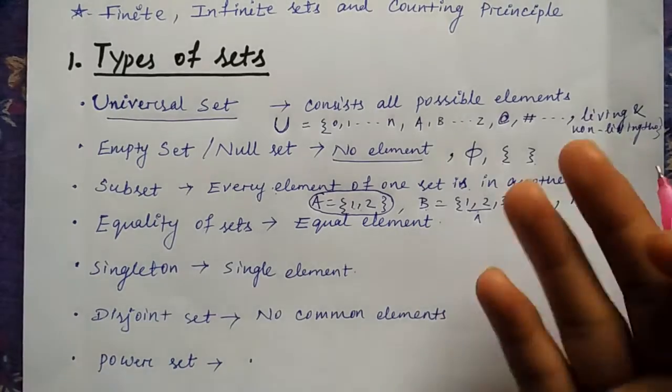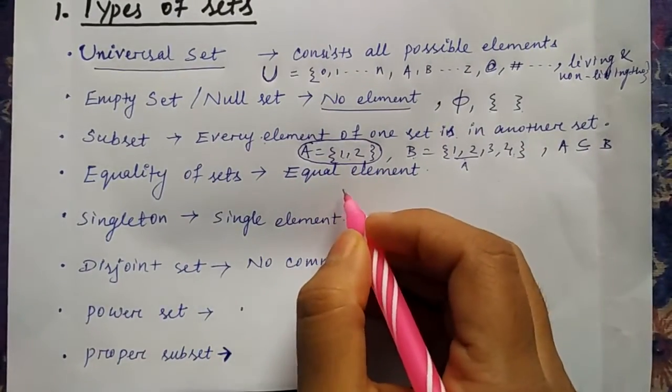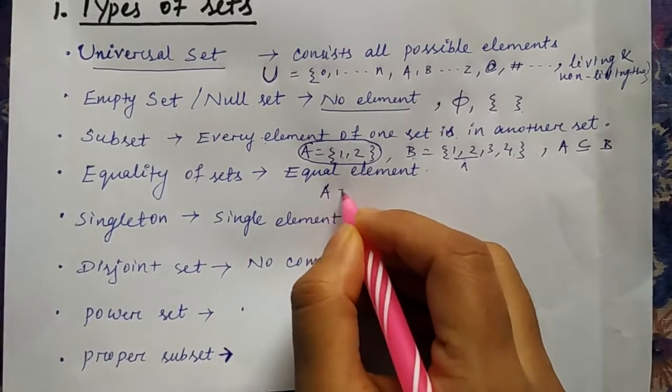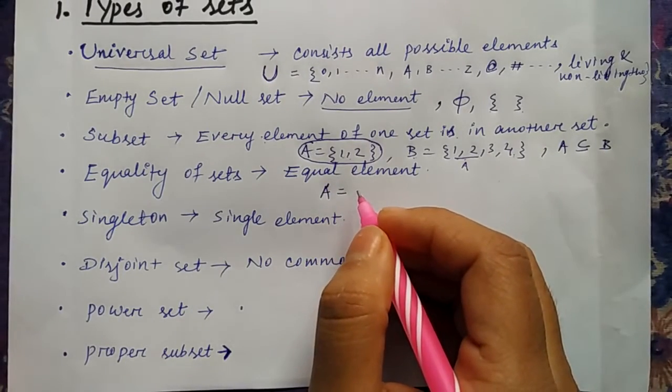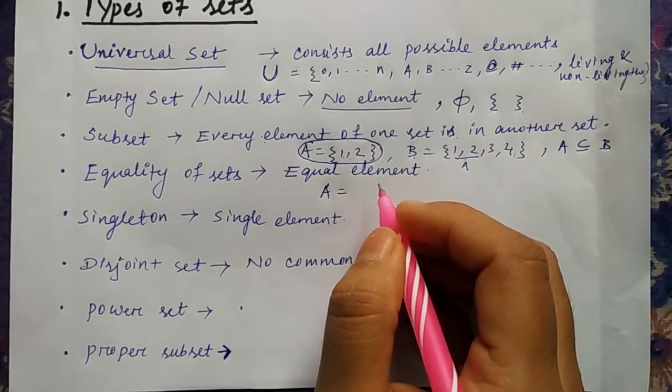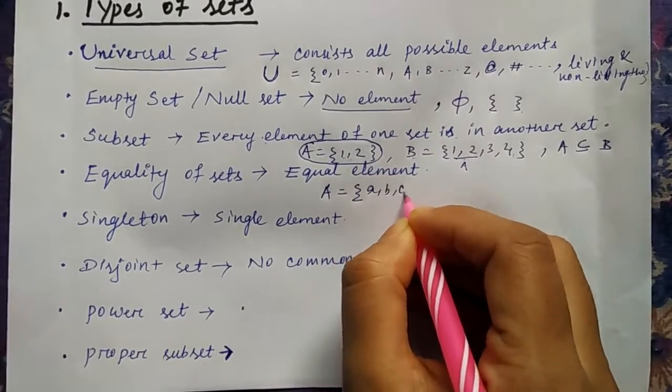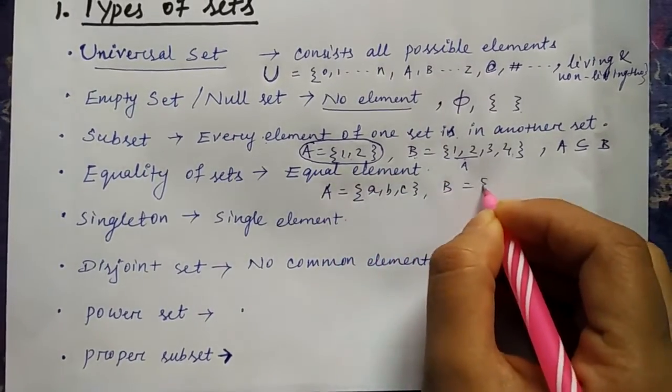Then equality of sets. Equality of sets means if two sets or more than one set where the element of the sets are exactly same. So if I'm taking A, A is having a, b, c and B is also having a, b, c, so this is known as equality of set where A and B elements are exactly same.